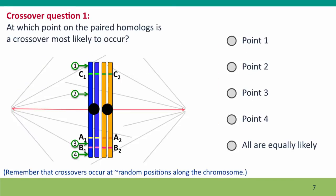And now the first question. I've indicated four points along these paired homologs, and I'm asking, at which point is a crossover most likely to occur? And the answer is that all points are equally likely. In reality, some crossovers are more likely to occur at some places called hotspots on the chromosome than at others. But for the purposes of this course, we will be treating crossovers as being equally likely at any point along the length of the chromosome. And in that case, any of these four points is equally likely.